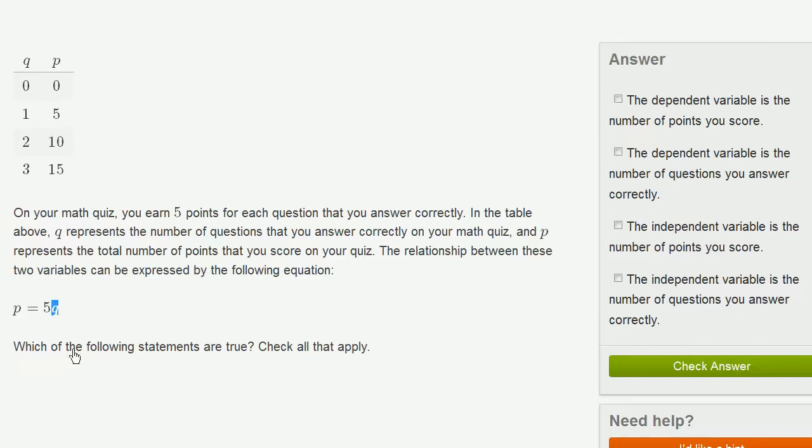So then they ask us, which of the following statements are true? Check all that apply. So let's think about this. They say the dependent variable is the number of points you score. So when you think about what's happening here, your number of points you score is being driven by how many questions you get right.